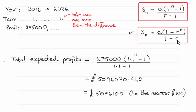You could use this version if you want; it's going to give you exactly the same answer. We tend to use this version because it keeps the numerator and denominator positive if the common ratio is more than one.